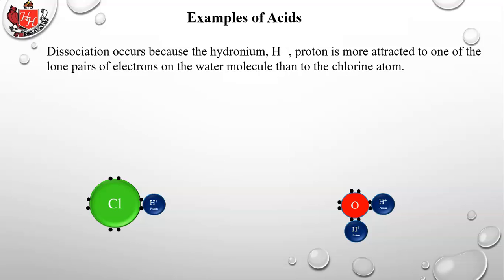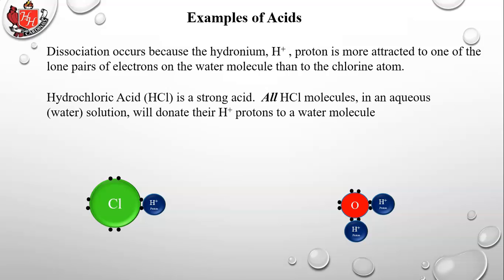Dissociation occurs because the H+ proton on the HCl is more attracted to one of the lone pairs of electrons on the water molecule than it is to the chlorine atom in its own molecule. Hydrochloric acid HCl is a strong acid — all HCl molecules in an aqueous solution will donate their protons to a water molecule.